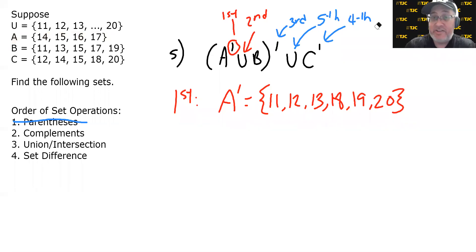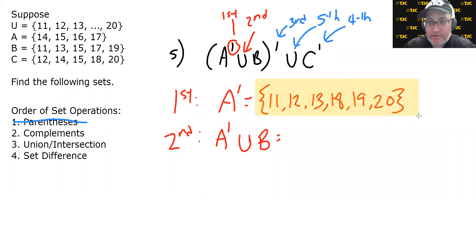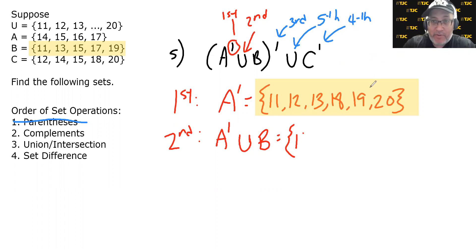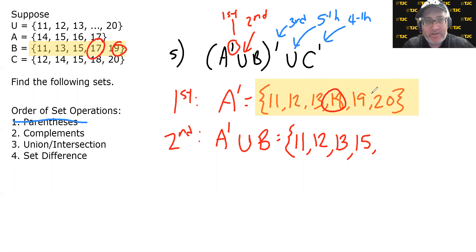Step two: find A'∪B. Union just means join together. Going through 11 to 20: 11 — both sets have it; 12 — A complement has it; 13 — both have it; 14 — neither set has it; 15 — B has it; 16 — neither has it; 17, 18, 19, and 20 are all accounted for. So A'∪B = {11, 12, 13, 15, 17, 18, 19, 20}.